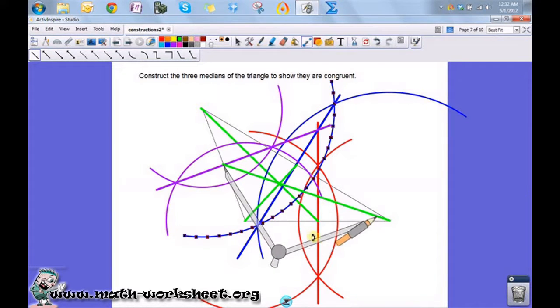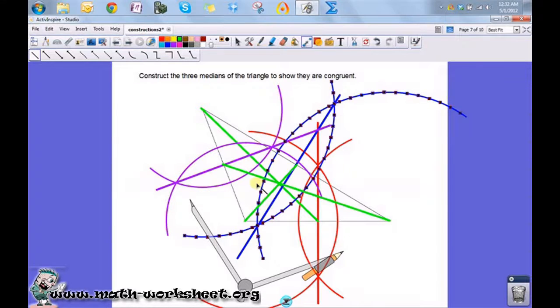So, this is not an isosceles triangle, because these two segments are not congruent. And this one is obviously shorter, this green one, this little one here, it's obviously shorter than the other two. So, this is not an isosceles triangle.